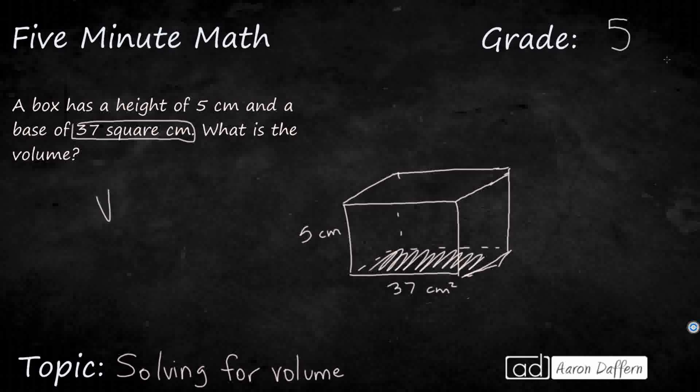Remember, one of the two different formulas we use is volume equals base times height. So we're literally just going to multiply 37 times 5. And so 37 times 5, it's going to be 35, 15, 185. Let's make sure we put the correct unit.